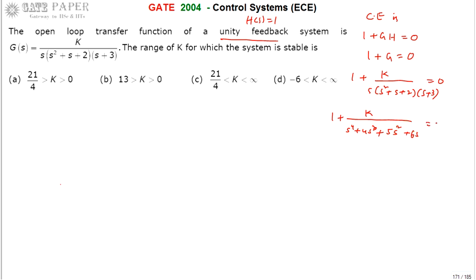The characteristic equation becomes S⁴ + 4S³ + 5S² + 6S + K = 0, because the denominator goes to the zero side. Taking the denominator common gives denominator plus K, and since the denominator also goes to zero, the characteristic equation is as written.